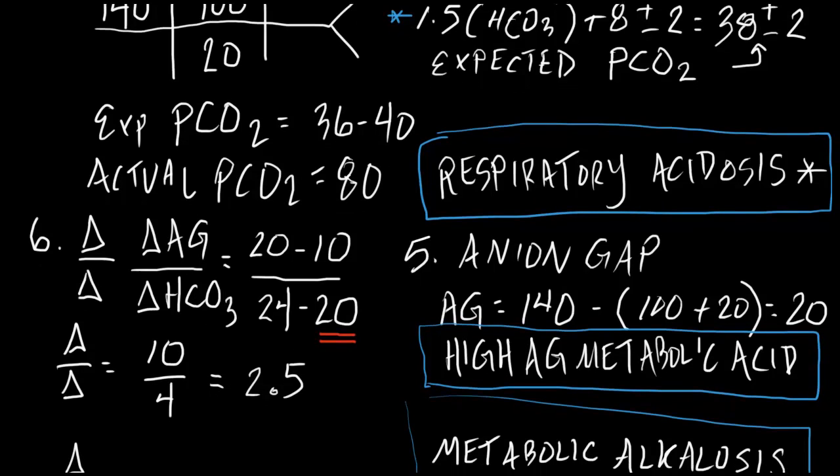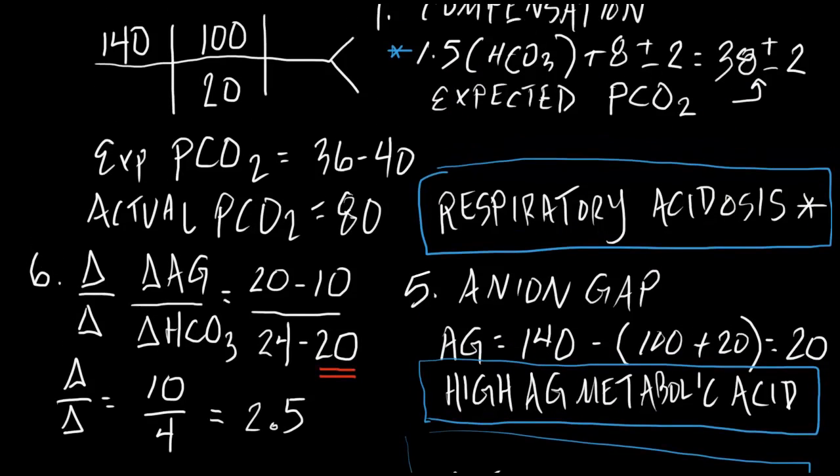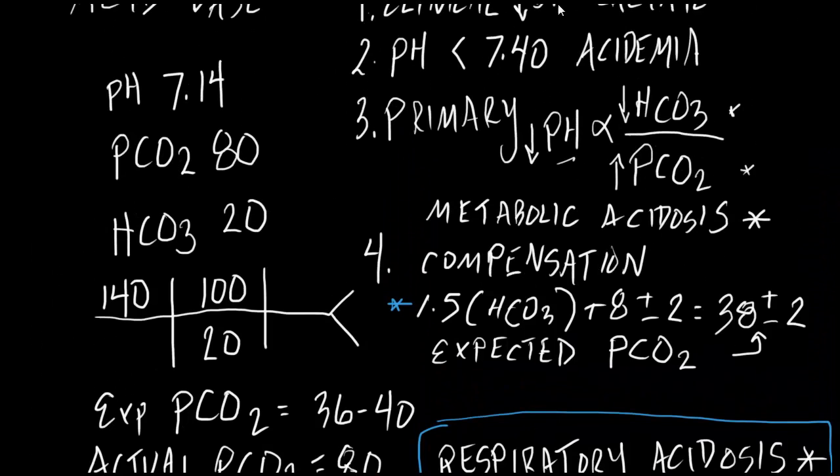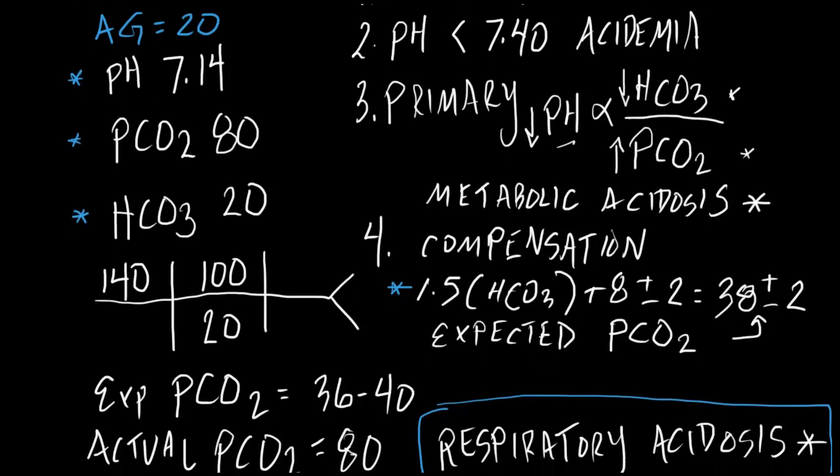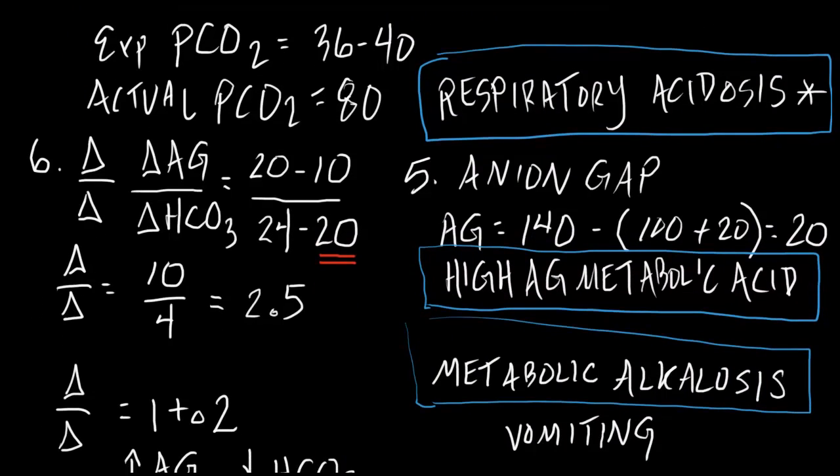So, this particular acid-base problem resulted in a triple acid-base disorder, which was found with relative ease using our particular six-step method. So, let's go back up to see what our original data was. Original data: pH is 7.14, PCO2 of 80, bicarb of 20, and an anion gap of 20. So, this is the type of problem that led to a diagnosis of a respiratory acidosis, a high anion gap metabolic acidosis, and a metabolic alkalosis. One, two, three. Triple acid-base disorder solved with ease, thanks to the six-step method. Thank you.